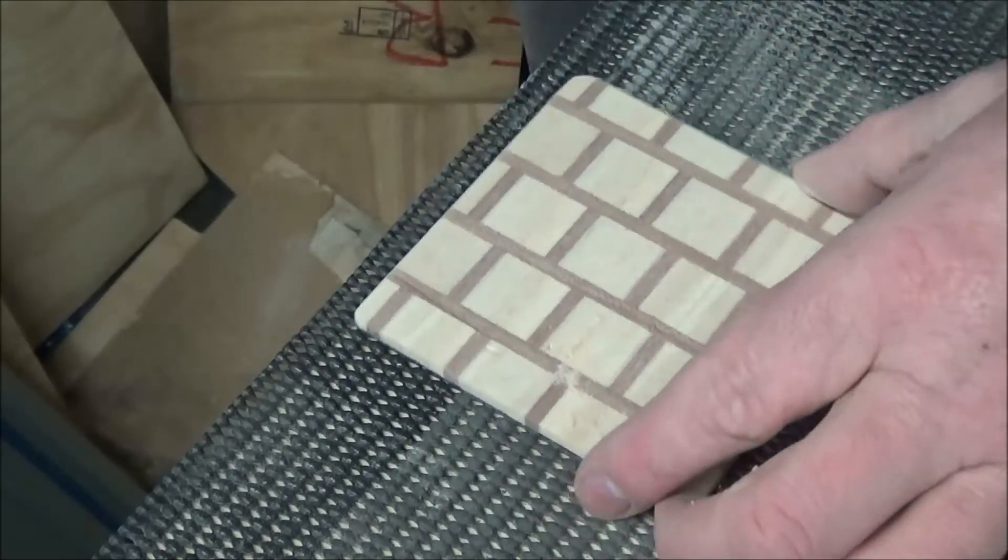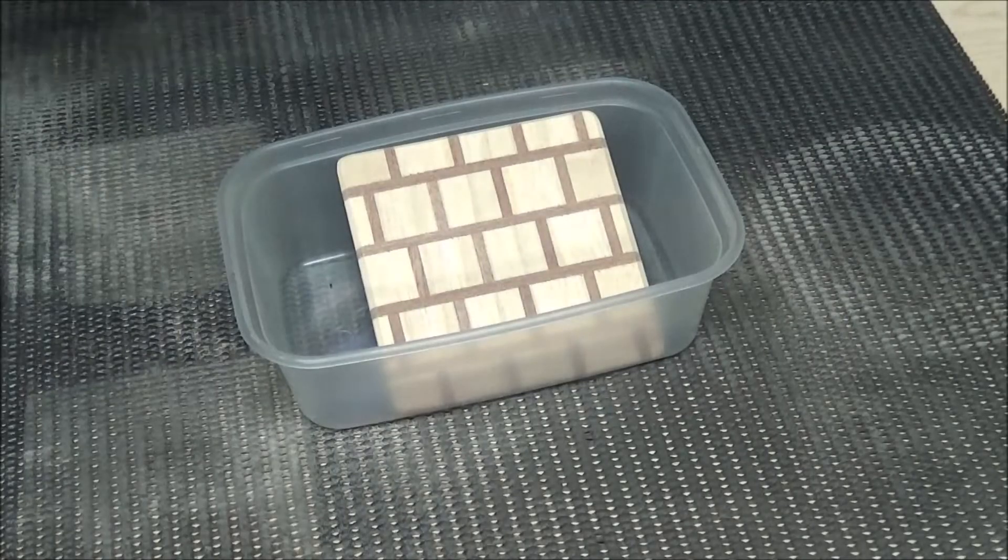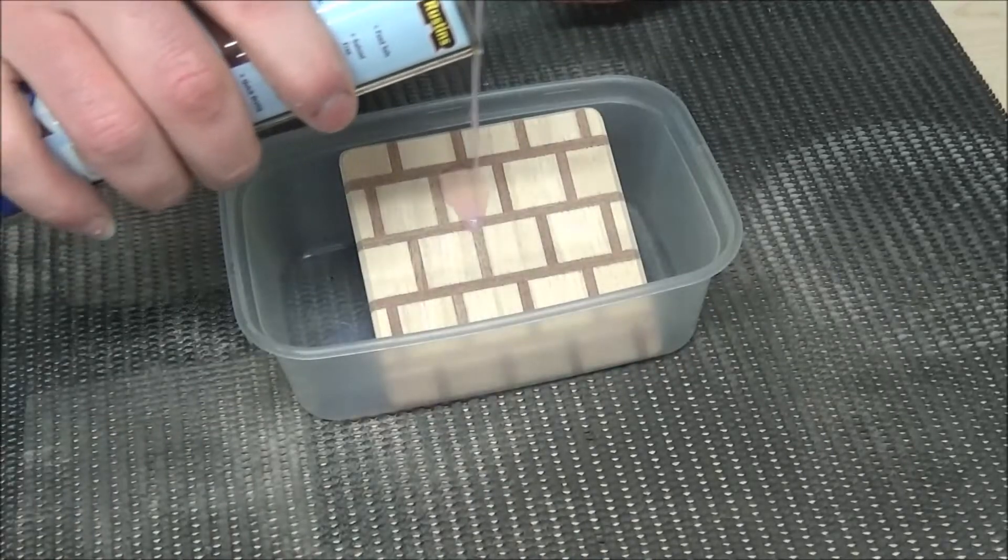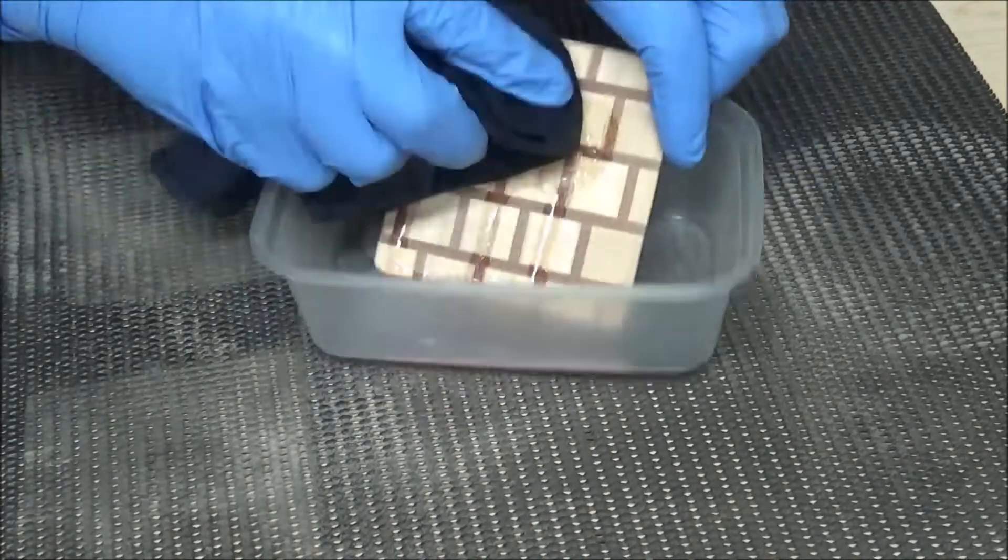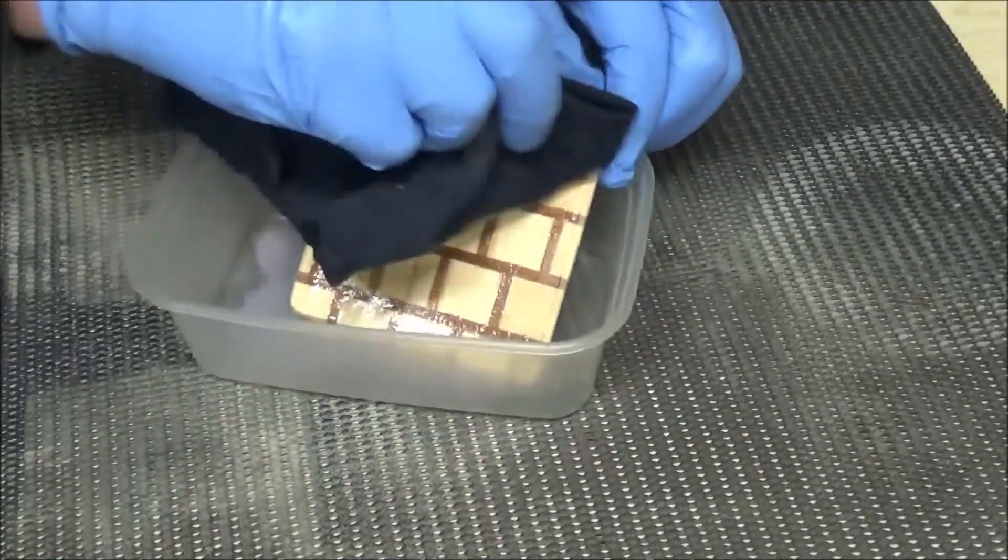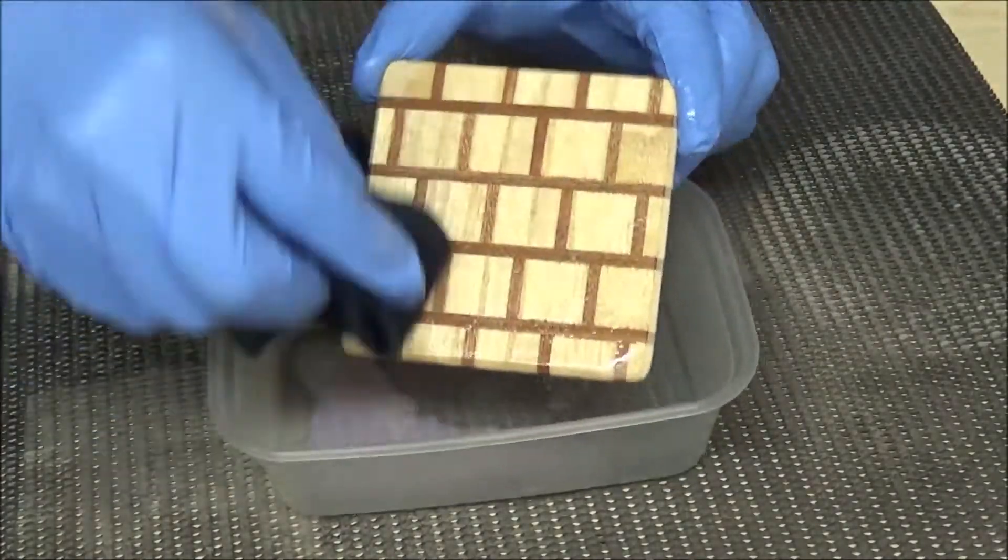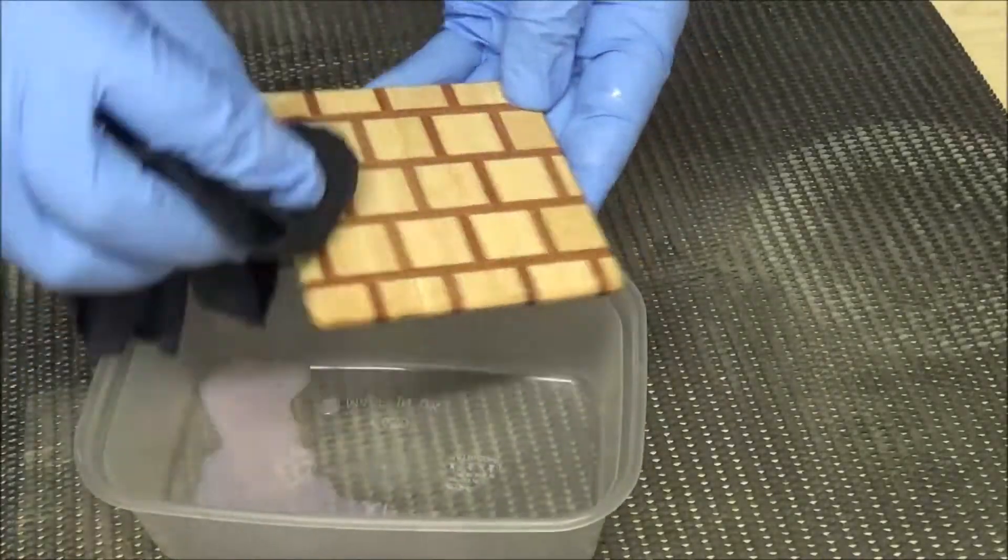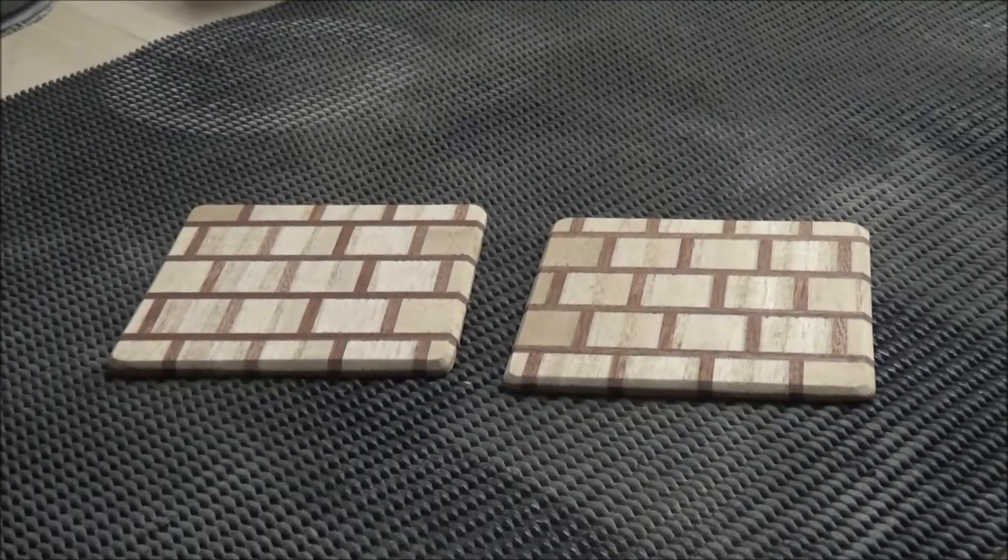After removing all the sanding dust I set about adding a finish. I used this butcher's block oil which is food safe just in case my nan places her biscuits on there. But it didn't quite give it the oomph I was hoping for, so I let it all soak in and then moved on to giving them 3 coats of lacquer, de-nibbing in between.